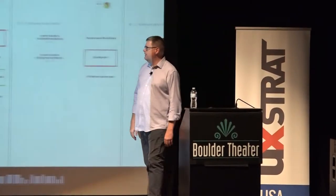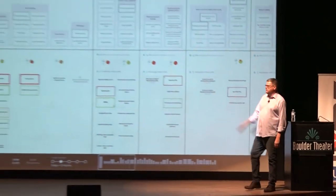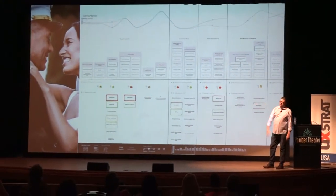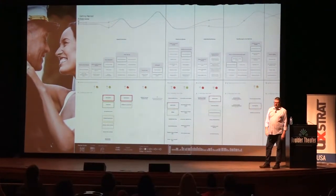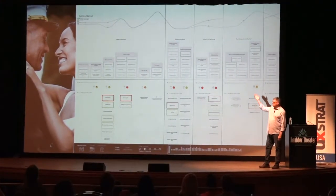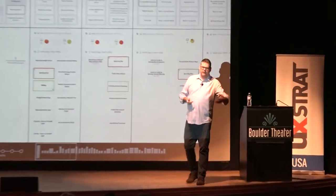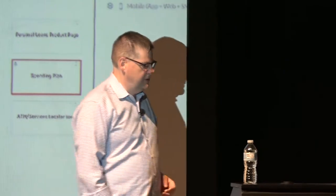If we zoom in on marriage for a second — this is a small chunk of what the overall model for marriage would look like. Across the top, you've got tasks like find a ring, buy a ring, finance a ring, insure a ring, pop the question, plan the reception, plan the honeymoon, have the reception, go on the honeymoon, et cetera.